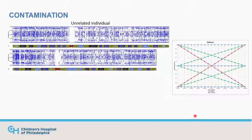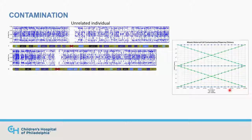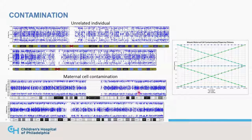With contamination from a random individual, we see all these different bands across every chromosome across the entire genome. For maternal cell contamination, it's less complex because we always share one haplotype with our mother, so those red bands — where one is AA and the other is BB — go away, because a child should always have at least one shared haplotype unless there's uniparental disomy. The example at a similar percent shows this one band is no longer present.